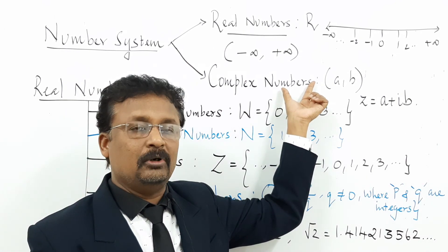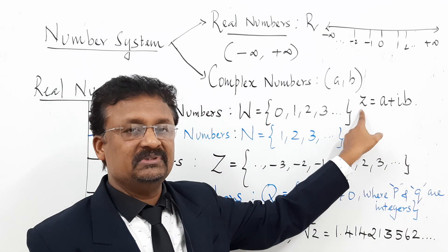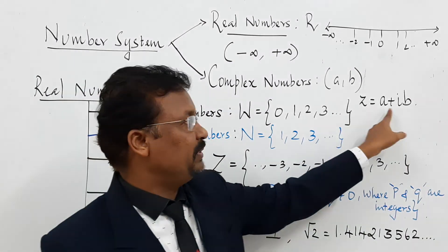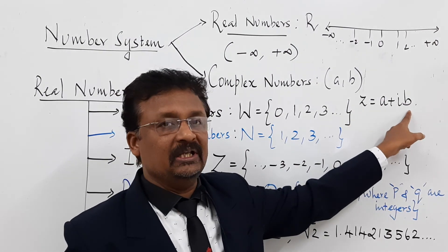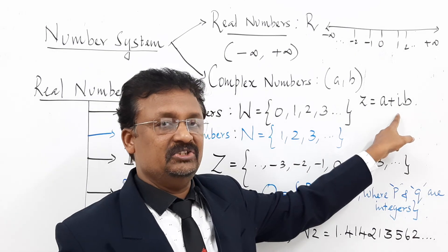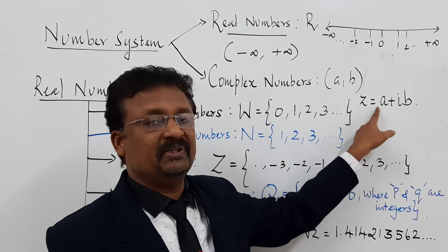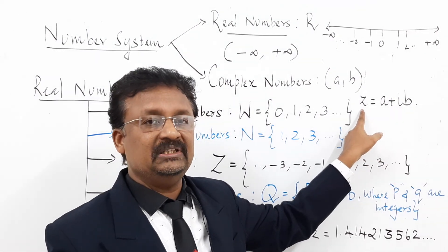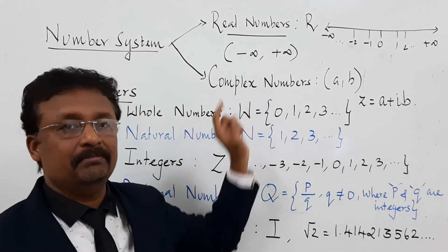How do we represent a complex number? We use the letter Z, in the form A plus iB, where A and B are real numbers. The value of i is the square root of negative 1, and we represent this in the Z plane. That is why we use the letter Z for complex numbers.